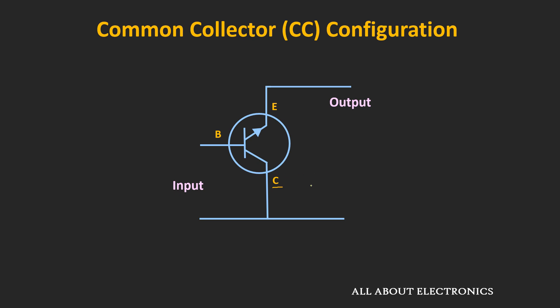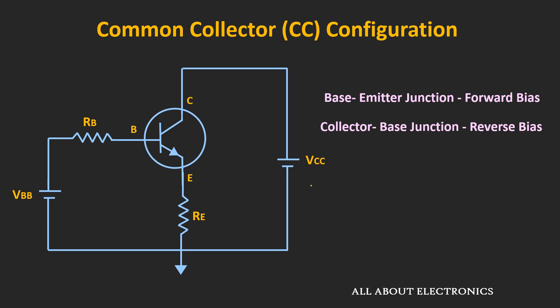When we say that the collector is common between the input and the output side, we are actually referring to the AC signal. But from the DC biasing perspective, the circuit would look different. And in terms of DC biasing, it looks quite similar to the common emitter configuration.